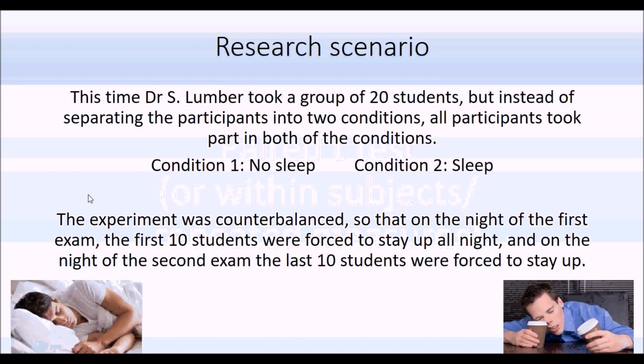An example of this is, imagine we took the same kind of research design and Dr. S. Lumber wanted to repeat this experiment, but this time she couldn't find very many students. She could only find 20 students to take part. If this was an independent t-test, we'd be looking at 10 students per group, which is bordering on quite low in terms of sample size. So she decided to do a within subjects t-test on this.